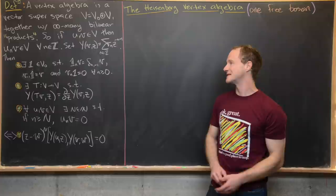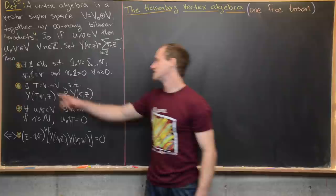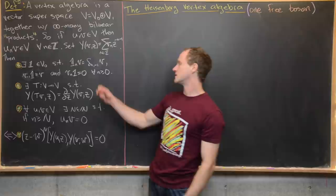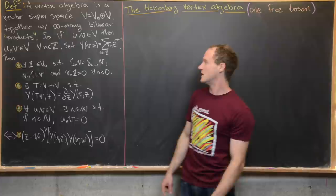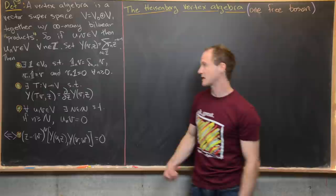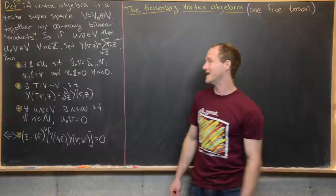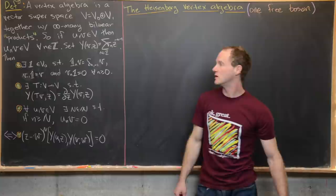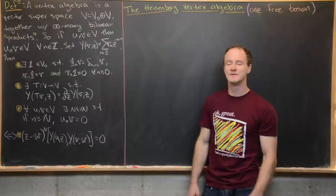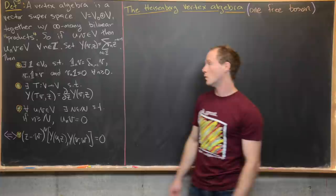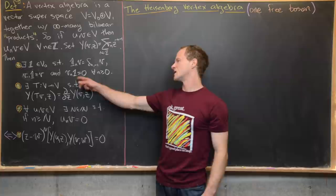Then we've got some axioms. The first axiom is the vacuum axiom: there is a special even vector denoted by 1, where 1_n(V) equals δ_{n,-1} V. In other words, the nth multiplication of this vacuum vector is zero unless n equals minus one. And then V_{-1} on the vacuum equals V — this is called the creation axiom. And V_n on 1 gives zero for all n greater than or equal to zero — this is some sort of annihilation condition.